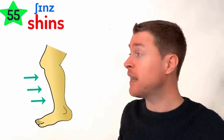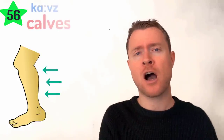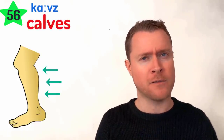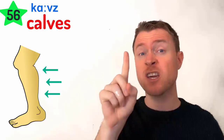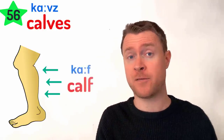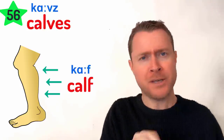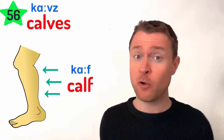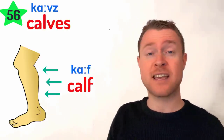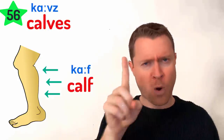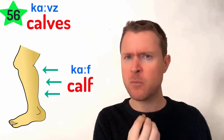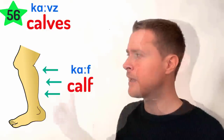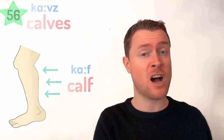On the front of your lower leg are your shins, and on the back are your calves. This is a strange one — if you're talking about one it's your calf, but if you're talking about two, it's calves. One calf with that 'f' sound, and two calves with a 'v' sound. Calf and calves.